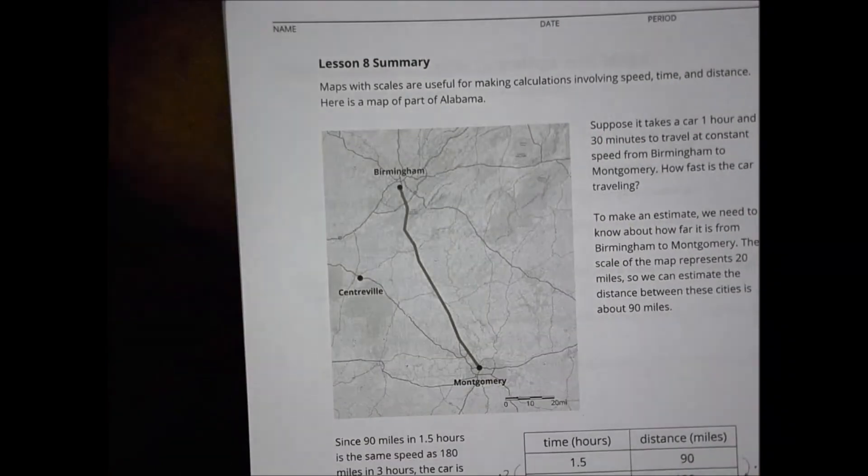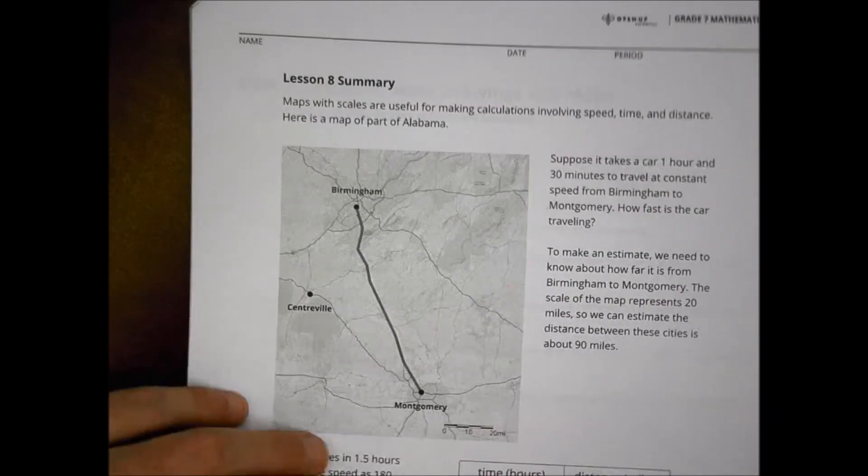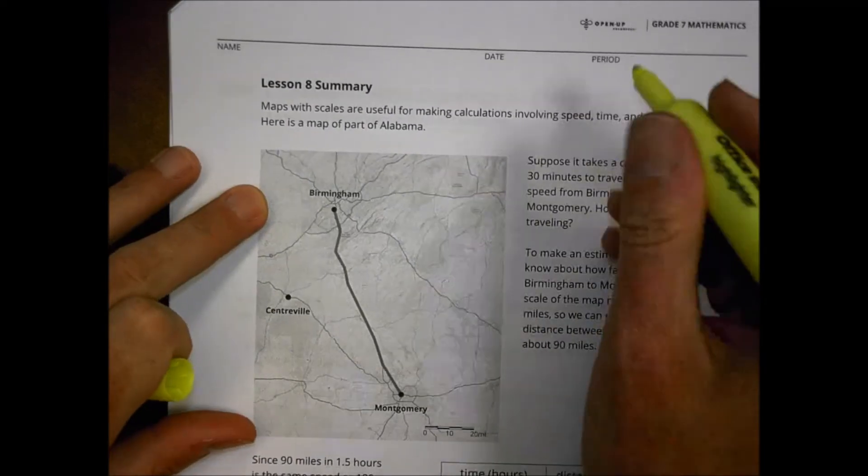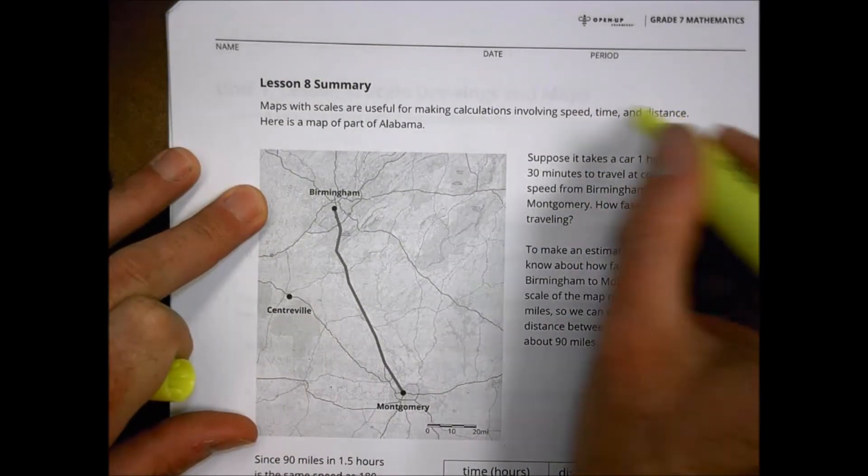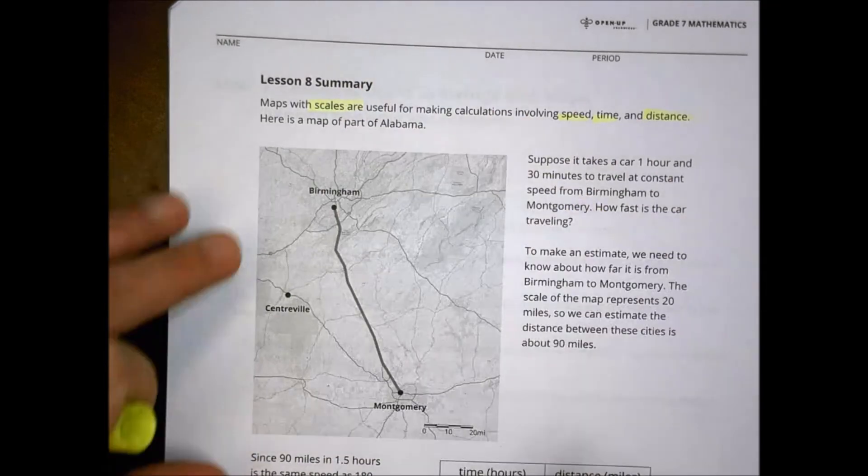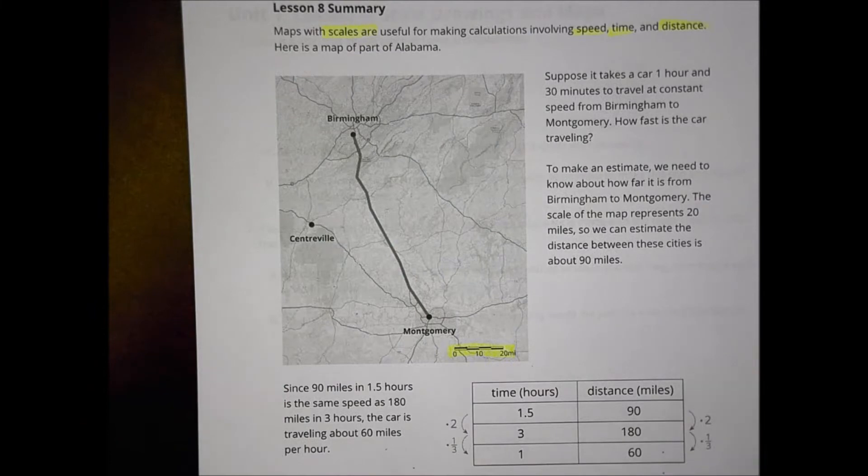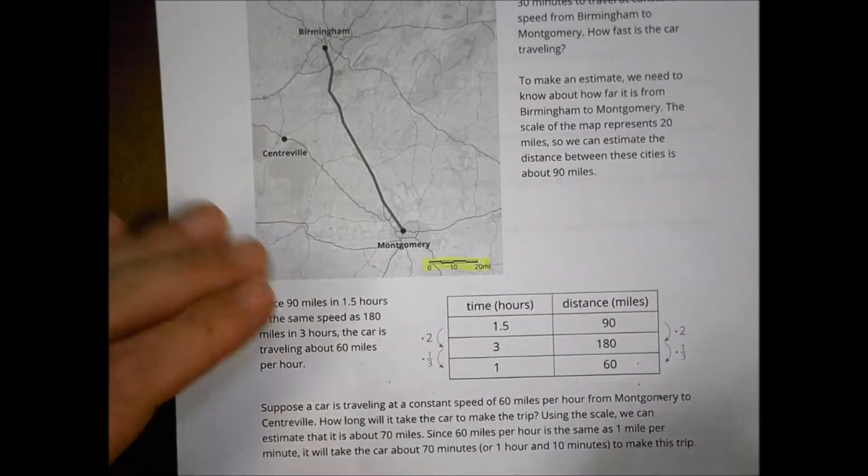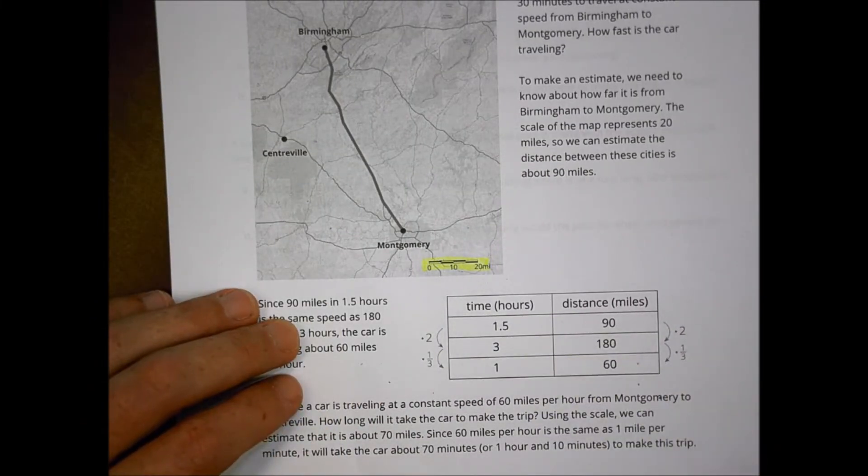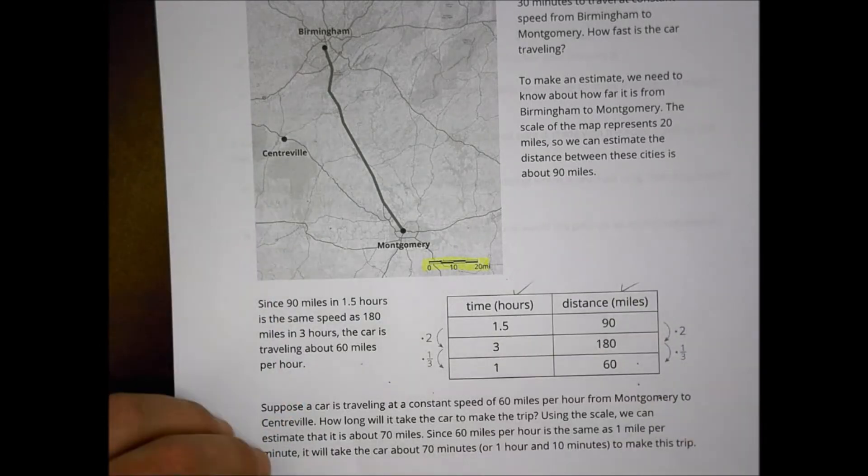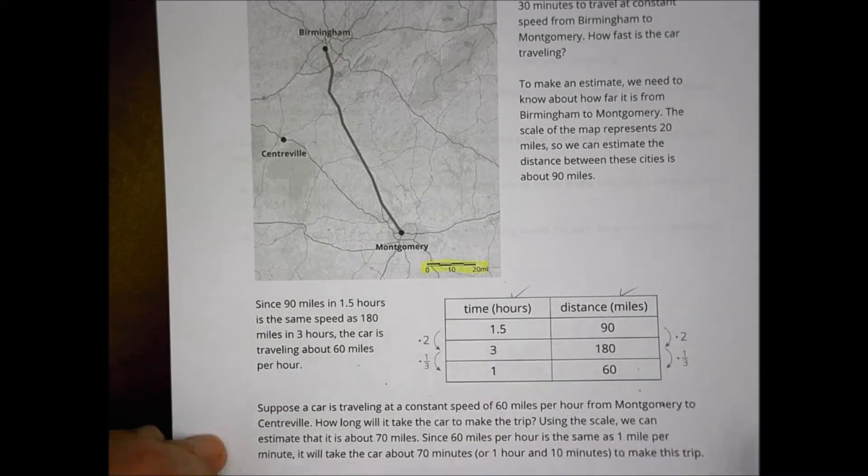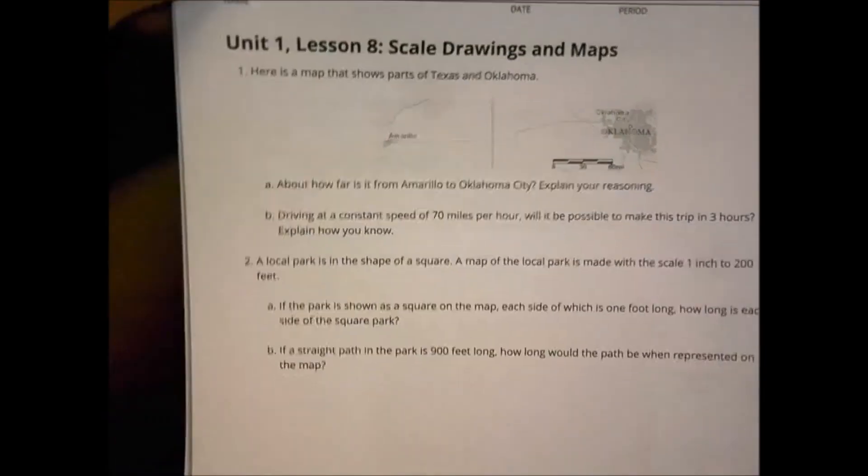So that's a recap of your lesson today. Just looking at some summary stuff, a summary statement. It says that maps with scales are useful for making calculations involving speed, time and distance. So we're looking at scale. So with all maps, take a look at the scale and see if you can make some estimations. It's good to perhaps make some charts, make sure you have your labeling of hours, miles and moving things around. A little bit of review here from probably a previous grade, but let's take a look now at the homework for tonight, which is what you're here for anyways, most likely.